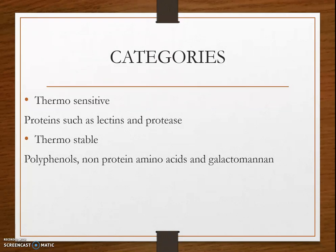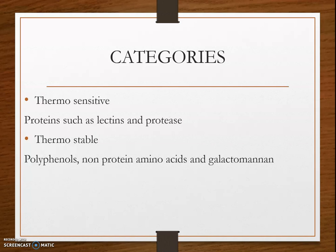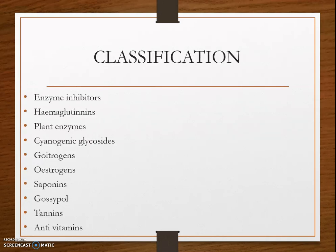Anti-nutritional factors are categorized into two types: thermosensitive and thermostable. Thermosensitive anti-nutritional factors are easily degraded at high temperatures and include proteins such as lectins and protease inhibitors. Thermostable anti-nutritional factors include polyphenols, non-protein amino acids, and galactomannin, which cannot be degraded under high temperatures. The classification of anti-nutritional factors includes enzyme inhibitors, hemagglutinins, plant enzymes, cyanogenic glycosides, goitrogens, estrogens, saponins, gossypol, tannins, and anti-vitamins.